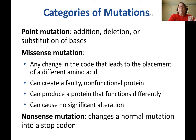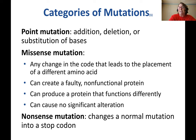There are certain types of mutations in terms of what they actually do to the genome. A point mutation is the addition, deletion, or substitution of a base at a particular nucleotide. There are several types of consequences of point mutations. One is a missense mutation — any change in the genetic code that leads to the placement of a different amino acid in the polypeptide chain when that mRNA is translated. It can create a completely faulty, non-functional protein.